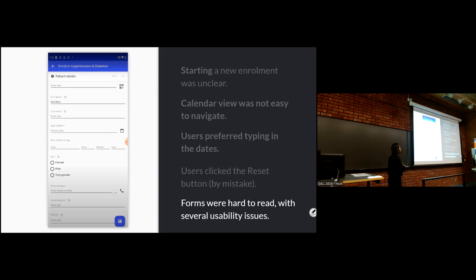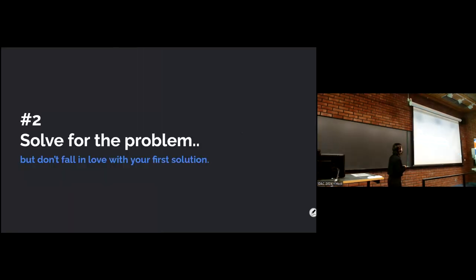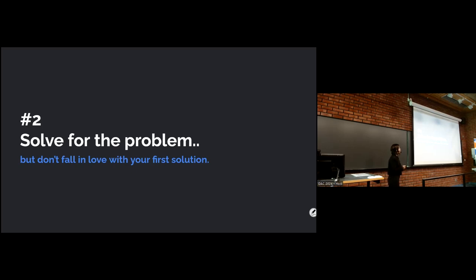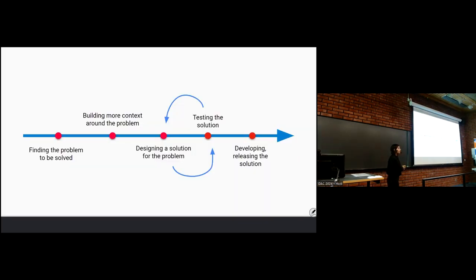We didn't want to fall in love with the first solution — that's a trap many people fall into. I ChatGPT'd this part: solving for a problem and sticking to the first solution is like marrying somebody you meet at a costume party — the first person may not be the best fit. We wanted to focus on testing quickly, failing quickly, and learning. Now that we'd identified the problems and designed several solutions, we needed to test them. If it works, great — we go ahead. More often than not, it doesn't work in the first few attempts, so we have to come back, redesign, and go over the loop.